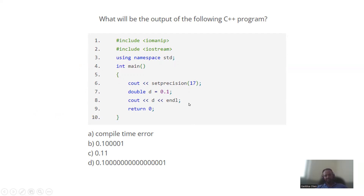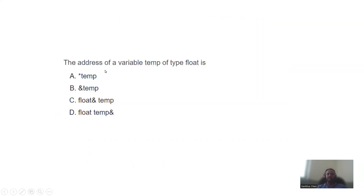This is the correct way to declare an array in C++. What will be the output of the following C++ program? The function uses setprecision to control decimal digits in output — setprecision is a precision language for specifying decimal output. The address of a variable temp of type float uses the address operator.